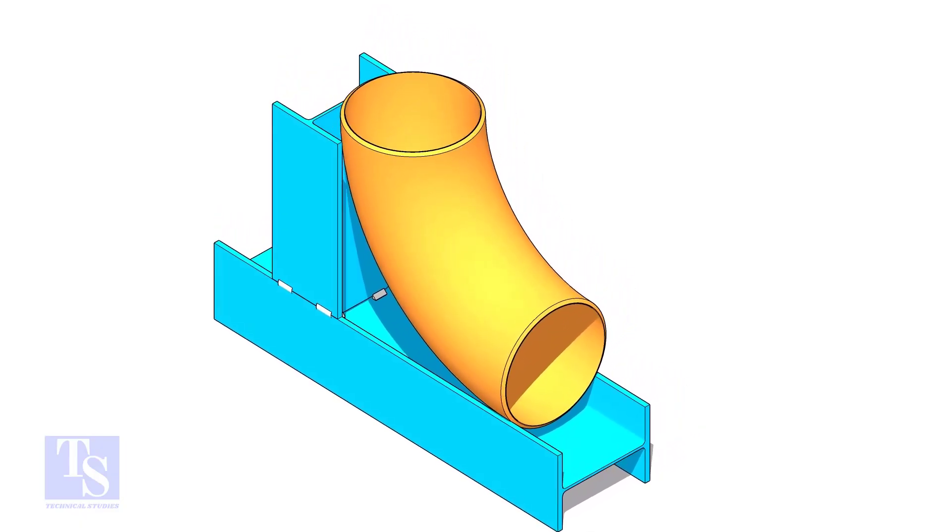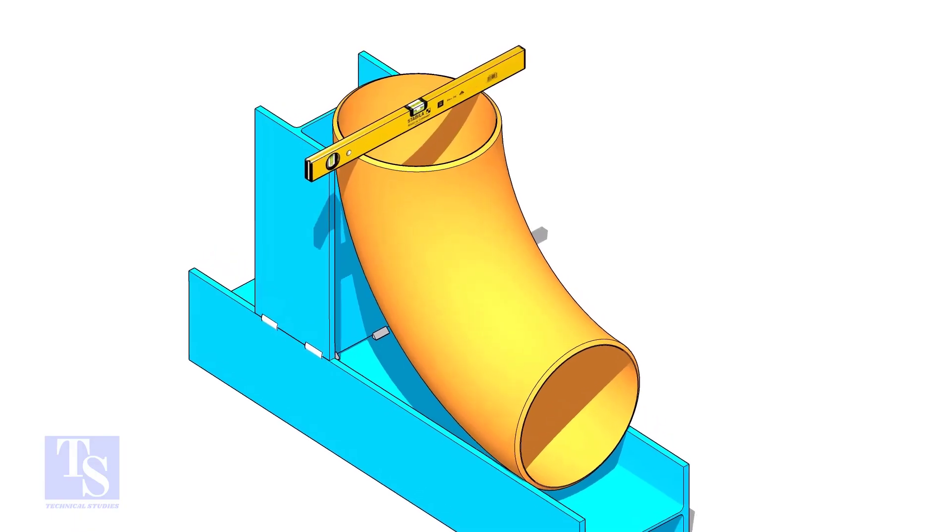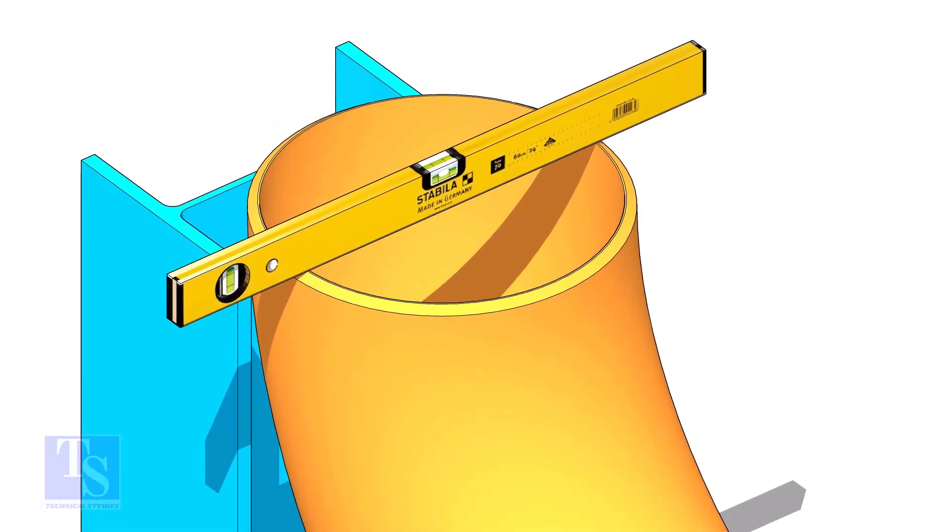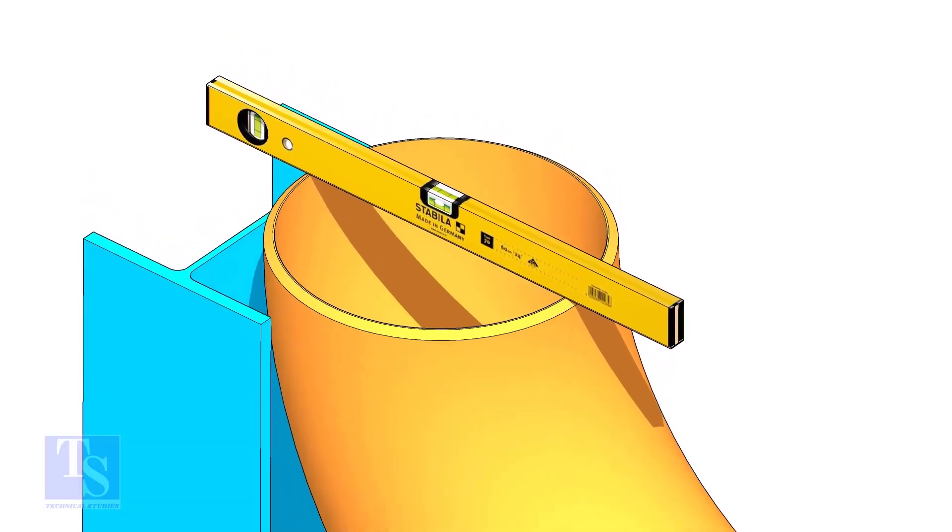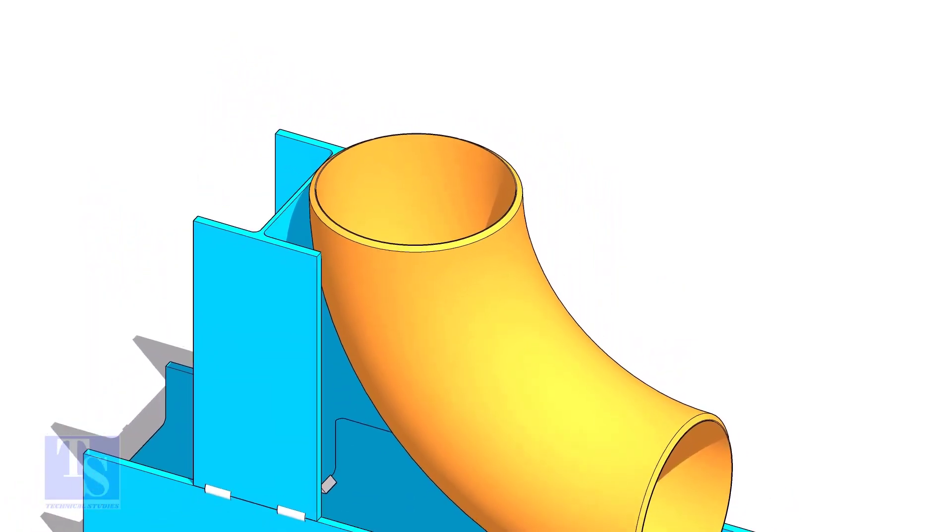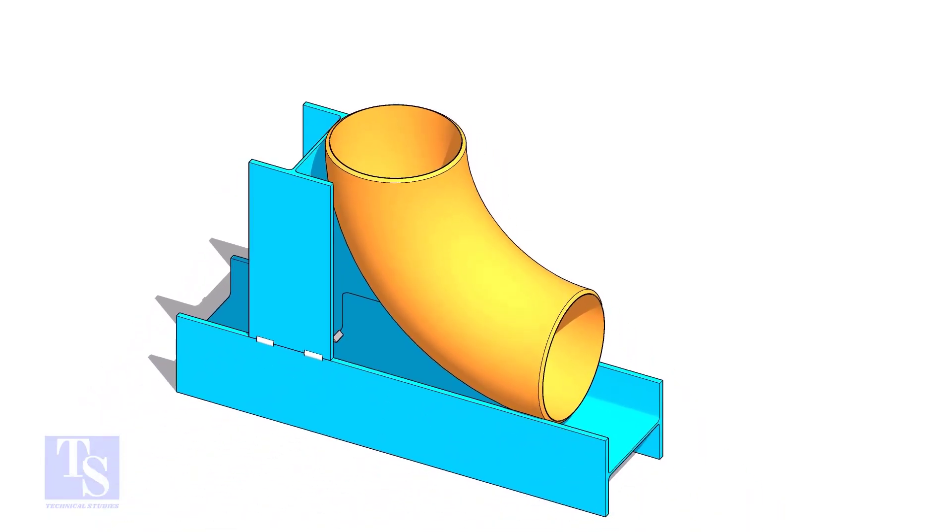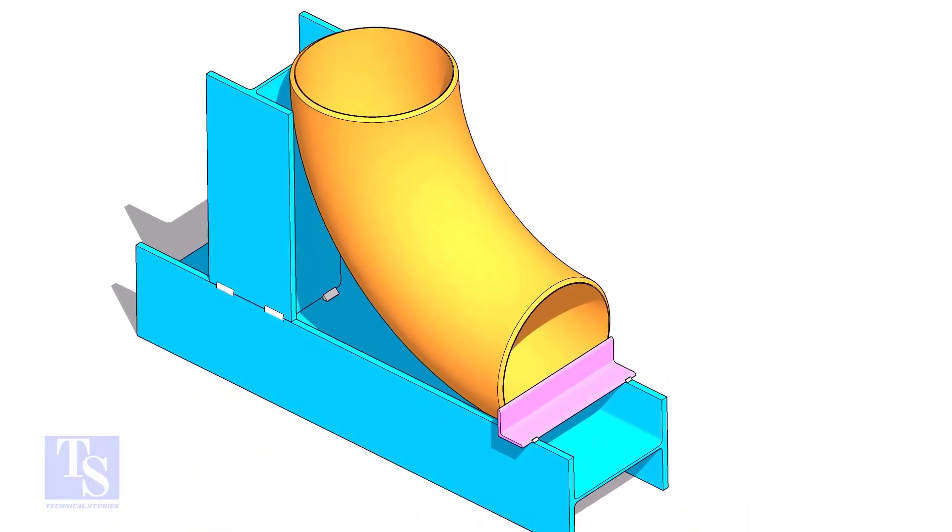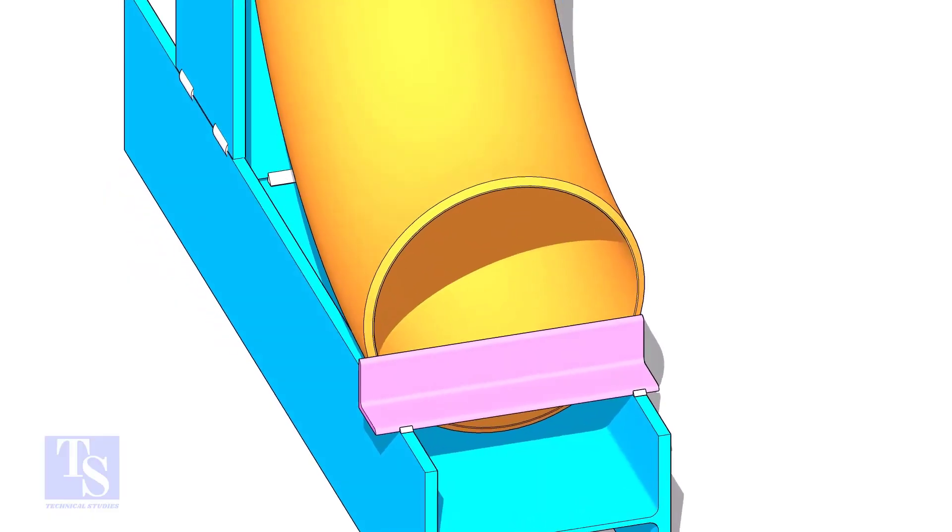Put the elbow in the jig. Level the top face of the elbow on both ways. Tack weld a piece of angle bar or a piece of a plate at the bottom side of the jig to arrest the elbow.